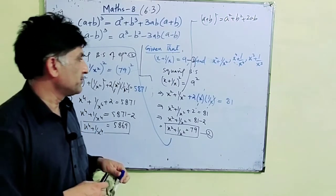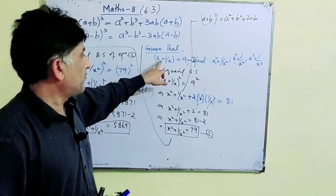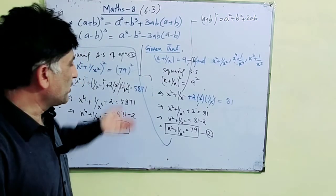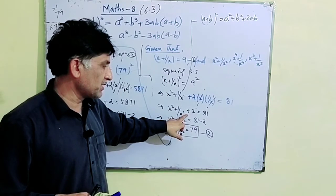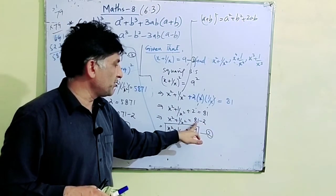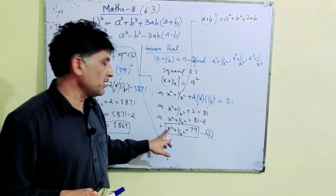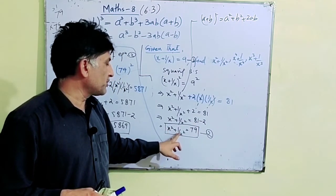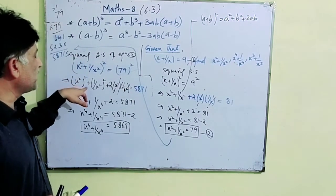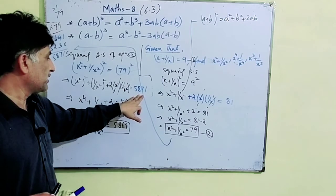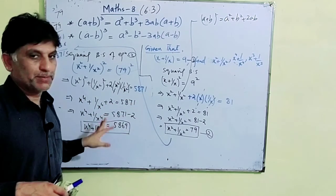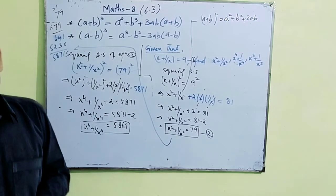If instead there were minus, i.e., x - 1/x = 9, then after squaring: x² + 1/x² - 2 = 81, so x² + 1/x² = 83. Then squaring again would give 83² - 2 for x⁴ + 1/x⁴, and the same method continues.